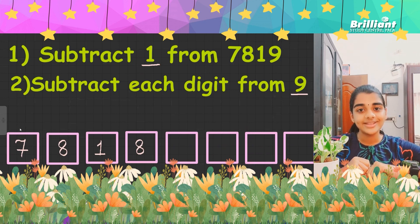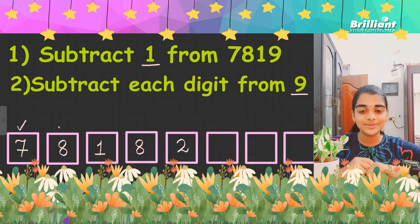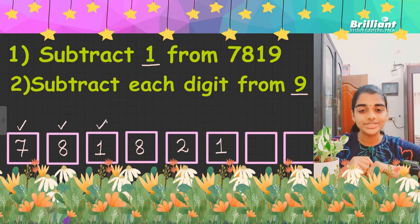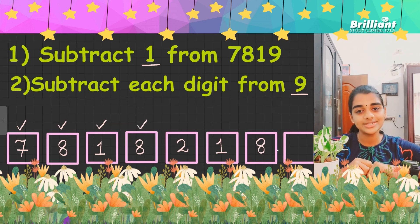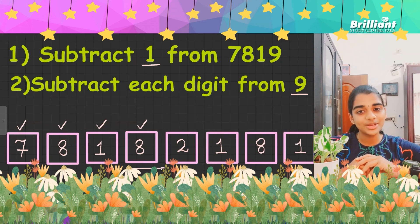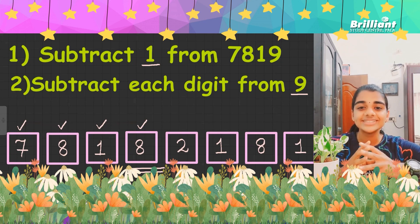That is, 9 minus 7 which is 2, 9 minus 8 which is 1, 9 minus 1 which is 8, and 9 minus 8 which is 1. So our final answer is going to be 7,818 2181. Yes, that is the answer. It is very simple.